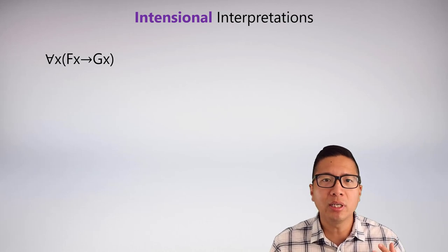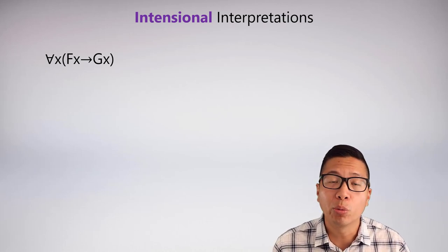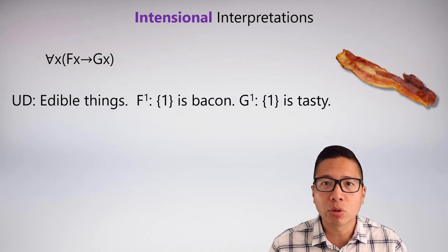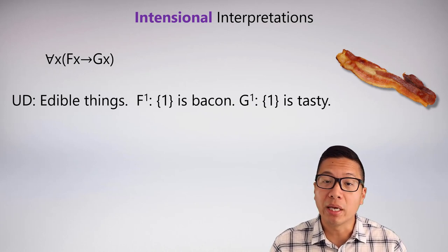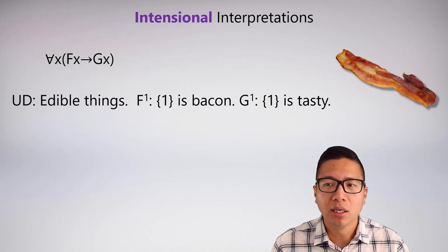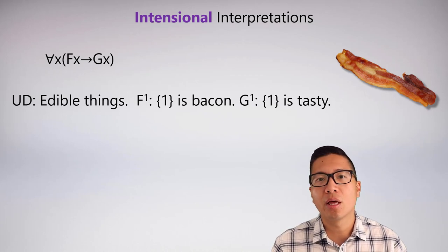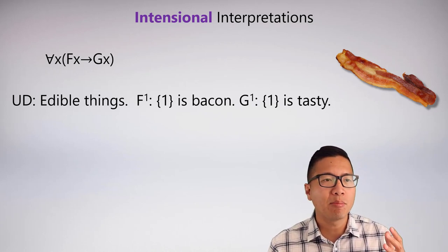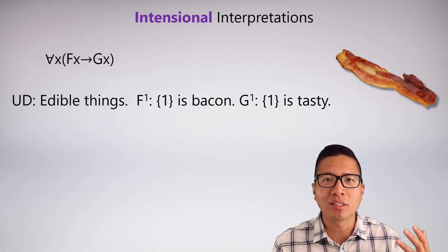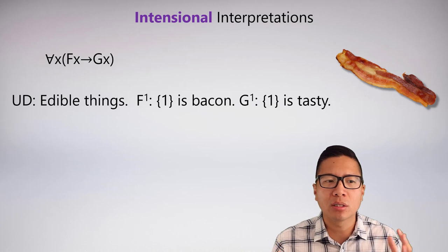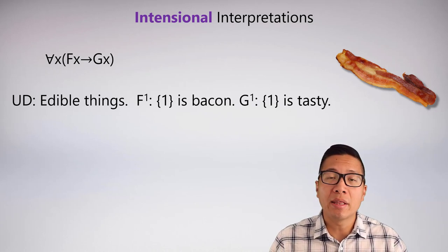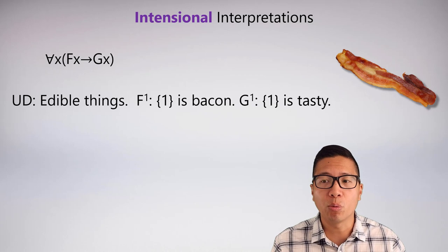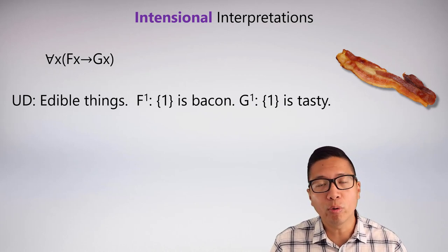We're ready to look at complete interpretations of 'for all x, Fx → Gx.' One way: the universe of discourse is edible things, F is 'is bacon,' and G is 'is tasty.' This says all edible things that are bacon are tasty. I restrict to edible things because someone might name a building 'bacon' and I wouldn't want to say a building is tasty — that's the convenient part of restricting the universe of discourse.